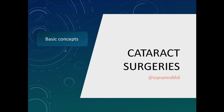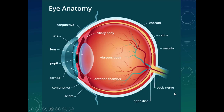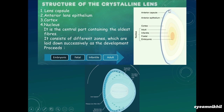The lens is a transparent bi-convex crystalline structure located between the iris and vitreous, suspended by zonules 360 degrees which hold the lens in position. Structurally it has an anterior lens capsule, a very thin posterior capsule, anterior epithelium, cortex, and nucleus. Anterior epithelium in the equatorial region forms new lens fibers successively; new lens fibers are laid down on older deeper fibers, therefore the central part is the hardest and peripheral part is softer — that is, nucleus is the hard part and cortex is the softer part.